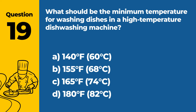Question 19: What should be the minimum temperature for washing dishes in a high-temperature dishwashing machine? A. 140°F (60°C). B. 155°F (68°C). C. 165°F (74°C). D. 180°F (82°C). Answer: D. 180°F (82°C). The minimum temperature for washing dishes in a high-temperature dishwashing machine should be 180°F (82°C) to effectively sanitize dishes.